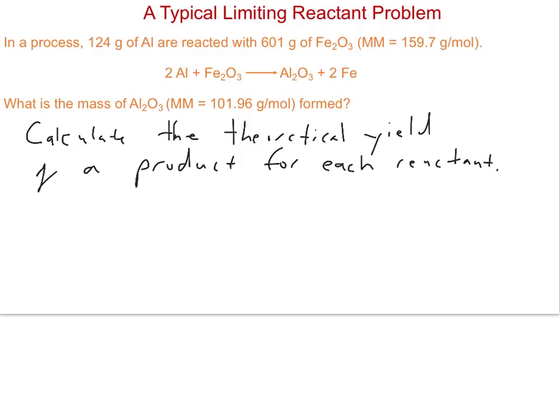In this particular example, we have aluminum and iron(III) oxide (Fe2O3) as our reactants. Two moles of aluminum react with one mole of Fe2O3 to make one mole of aluminum oxide and two moles of iron. The question is asking about aluminum oxide, so it makes sense to do that calculation.